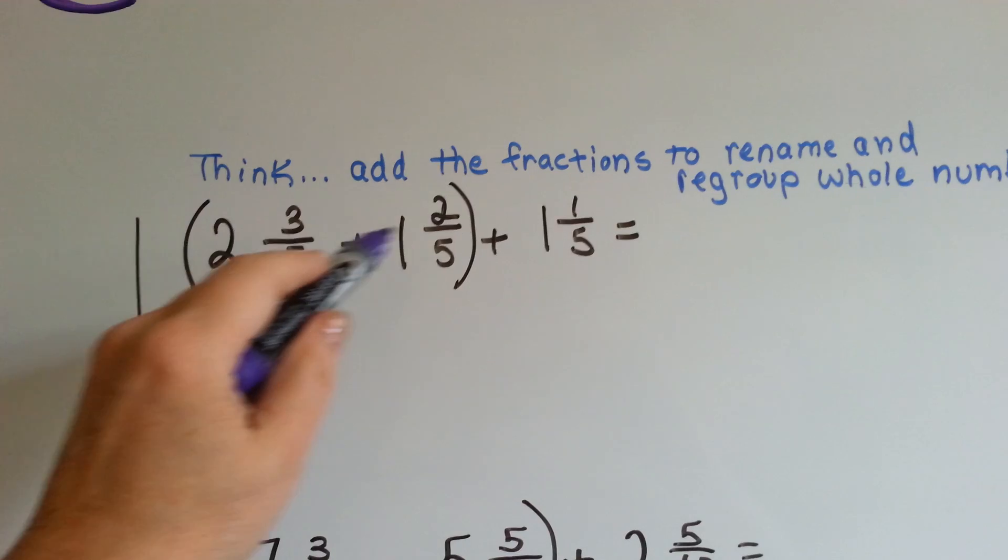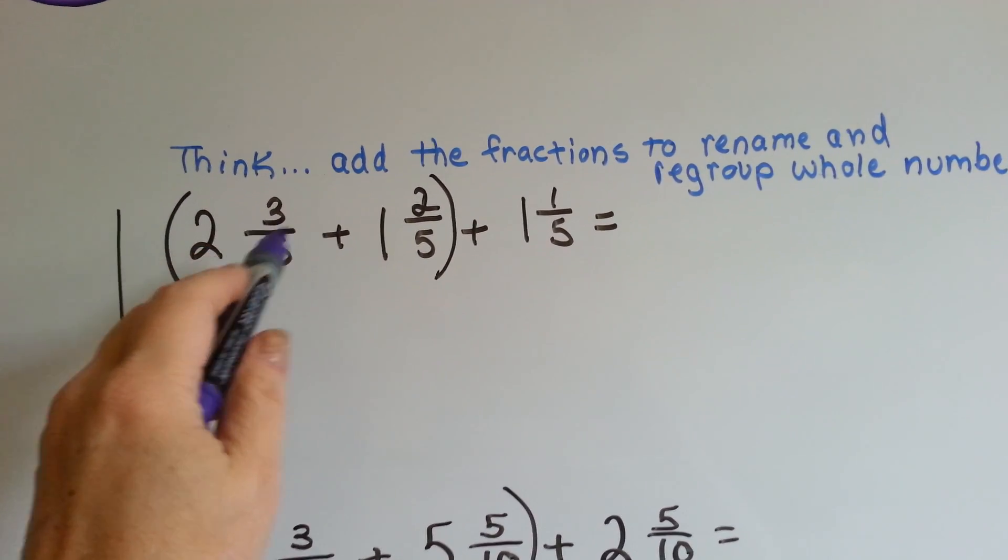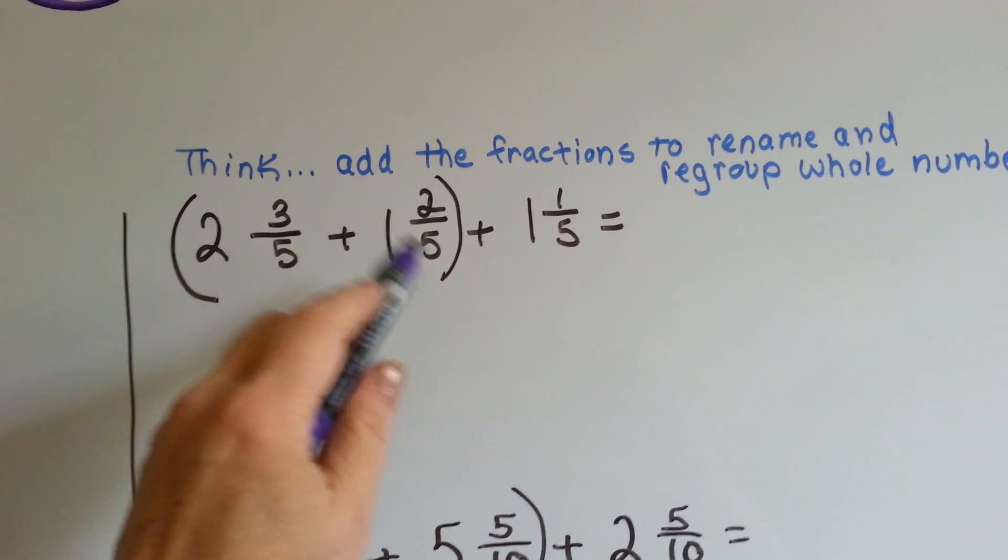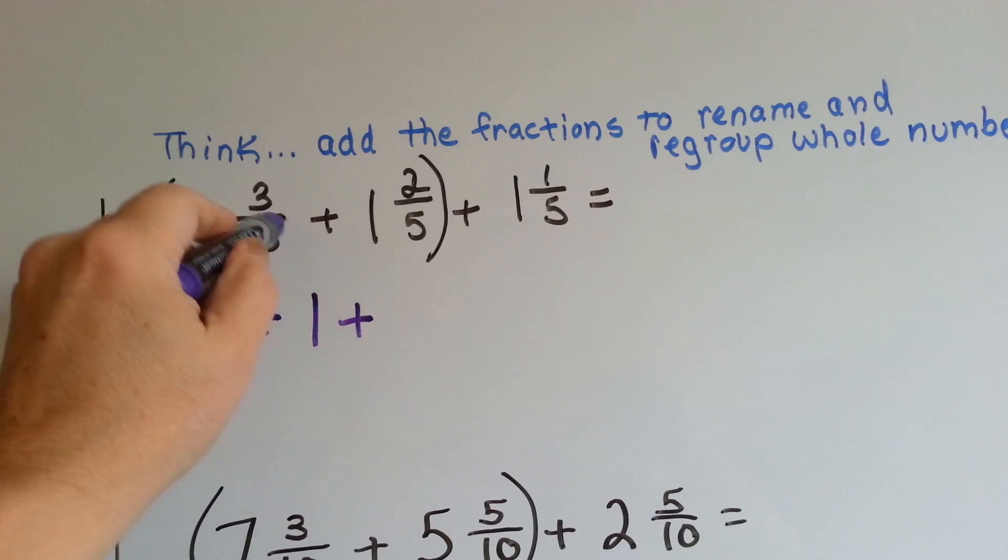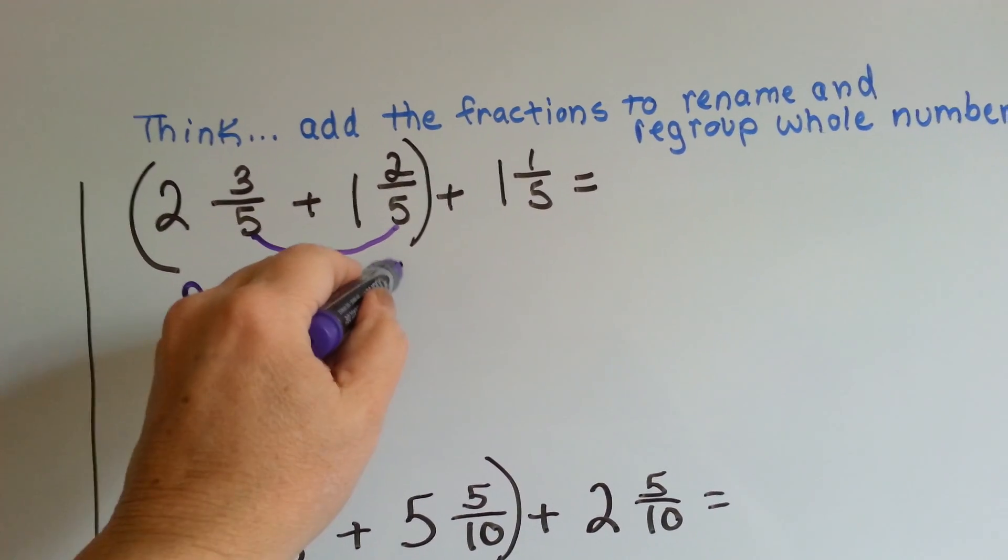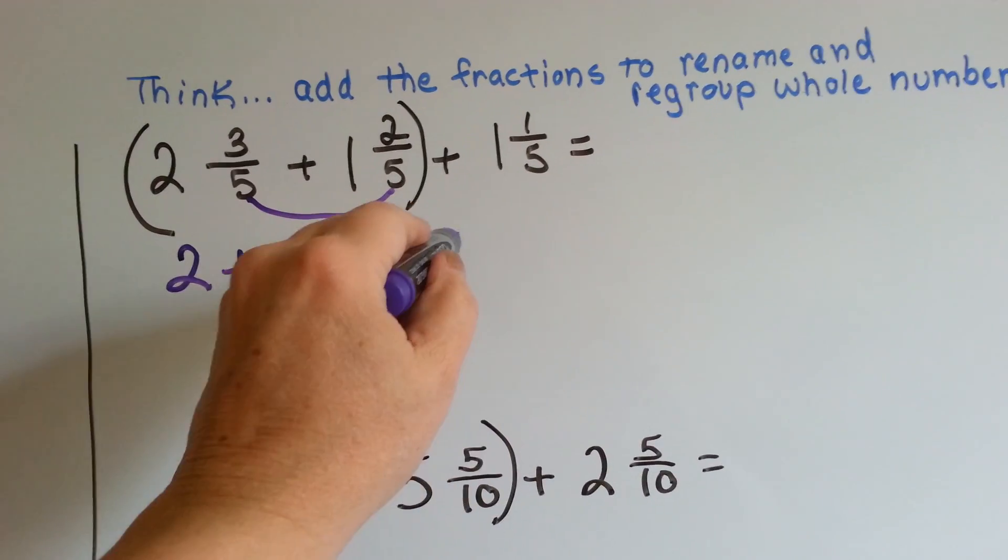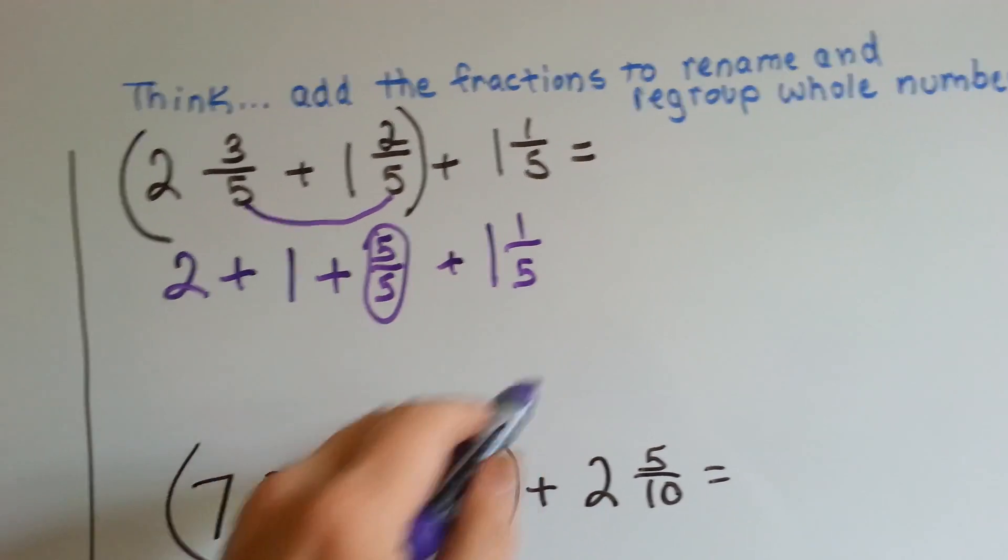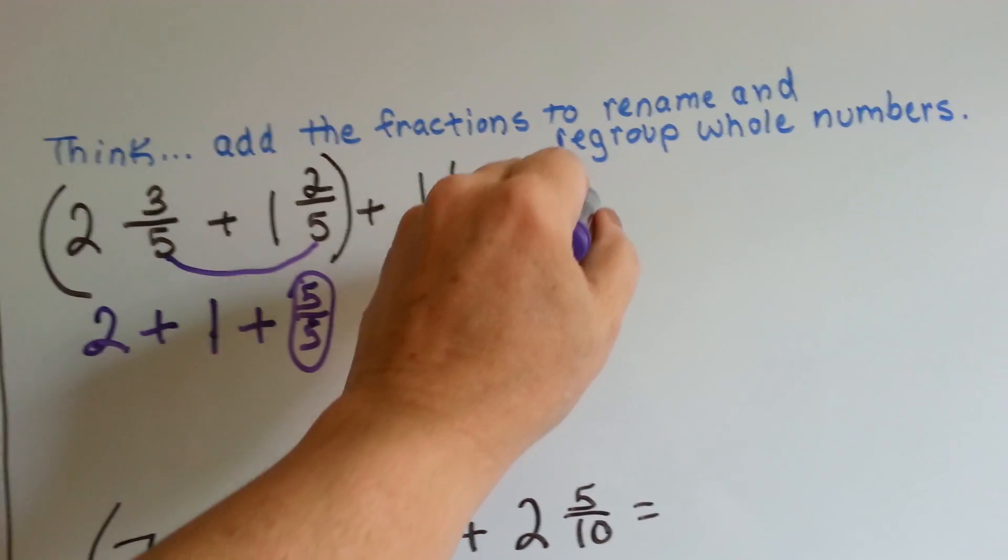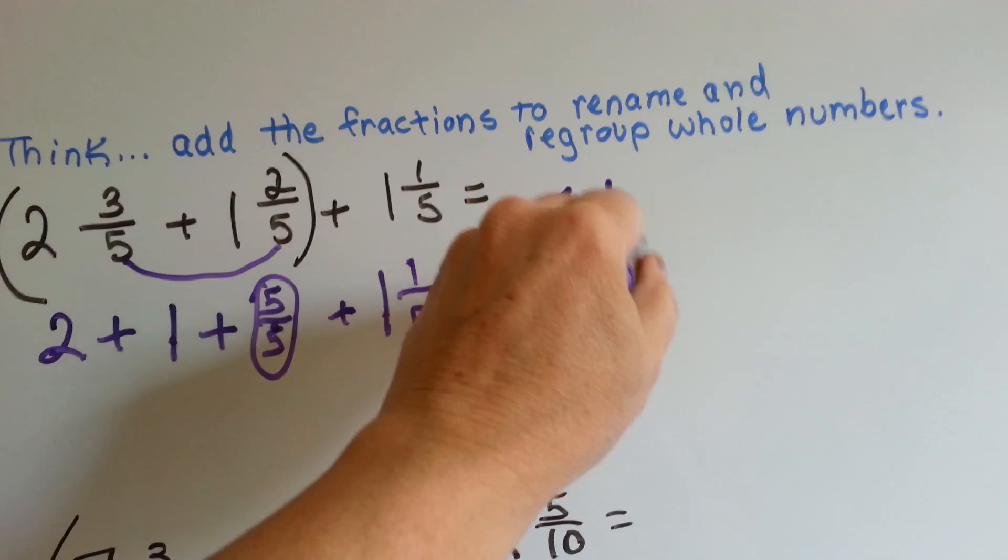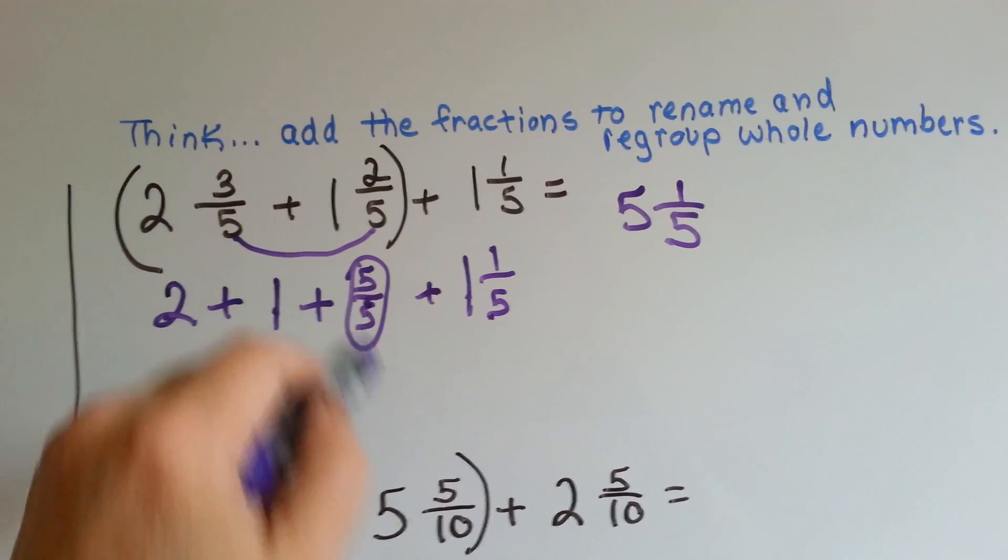If you look at the 3 fifths and the 2 fifths and if we added them together, we would get one whole. We would get 5 fifths. We would have 2 plus this 1 and then plus these two together, make 5 fifths, which is one whole, right? Plus another 1 and 1 fifth. So we'd have 2, 3, 4, 5, and 1 fifth. So it was kind of good that these were grouped together because these two fractions helped us get a whole number.